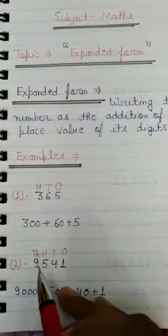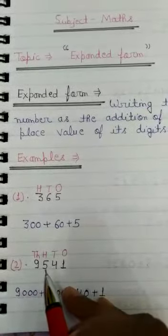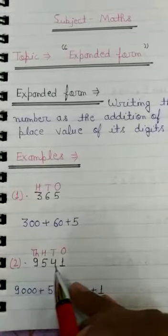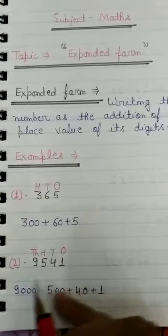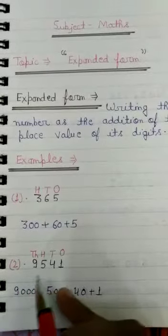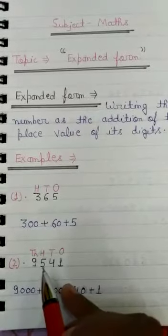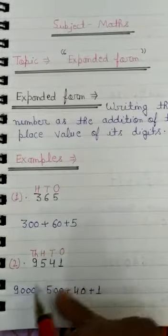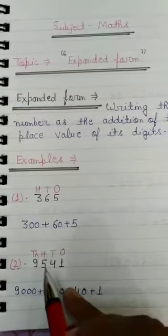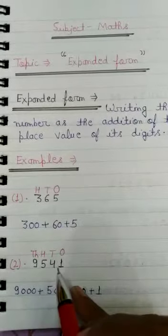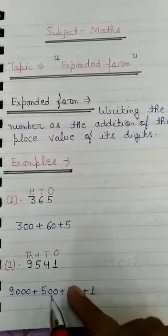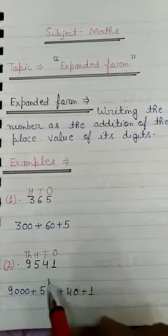Now second example: 9554. Firstly we will write 9. How many numbers after 9? 3 numbers. Then we will write 3 zeros — so 9000. Then write 5. How many numbers after? 2 numbers. Then we will write 2 zeros — so 500.